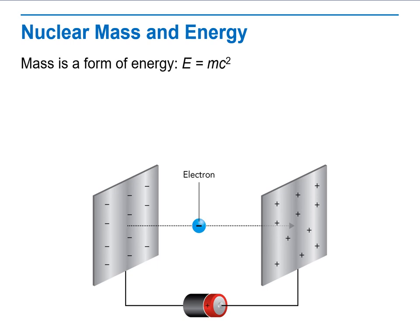Now, we'll talk about nuclear mass and energy. Mass is a form of energy. Famous Einstein mass energy equation, E equals mc squared, allows us to explain the relationship between the mass and energy and how tiny changes in mass can result in a lot of changes of energy.